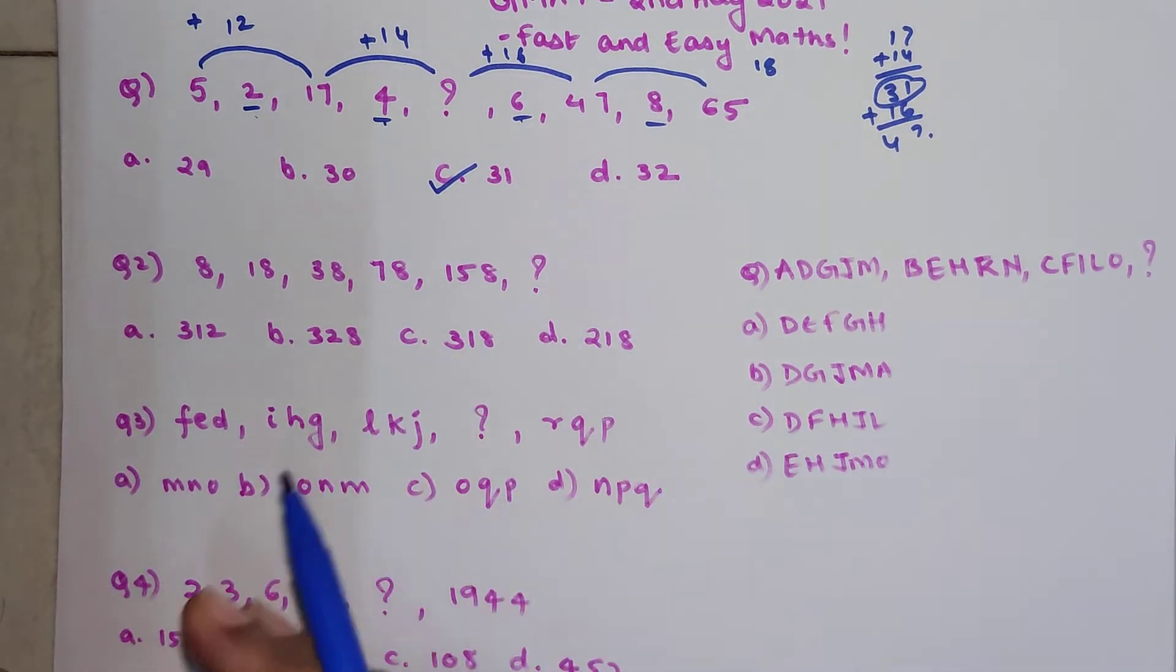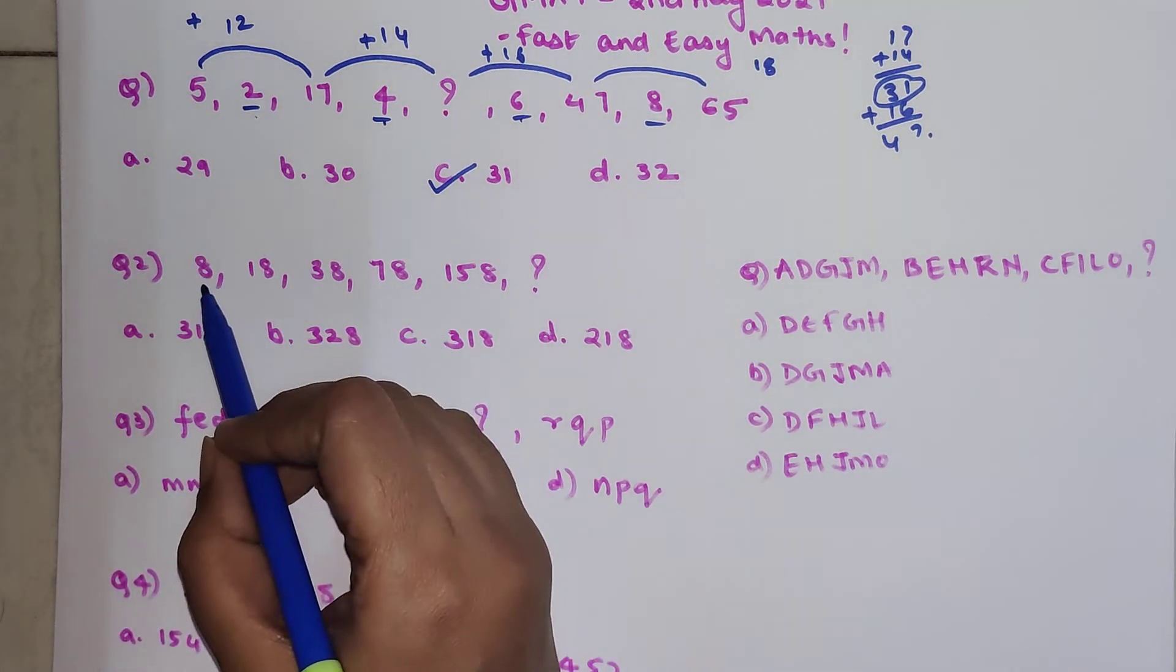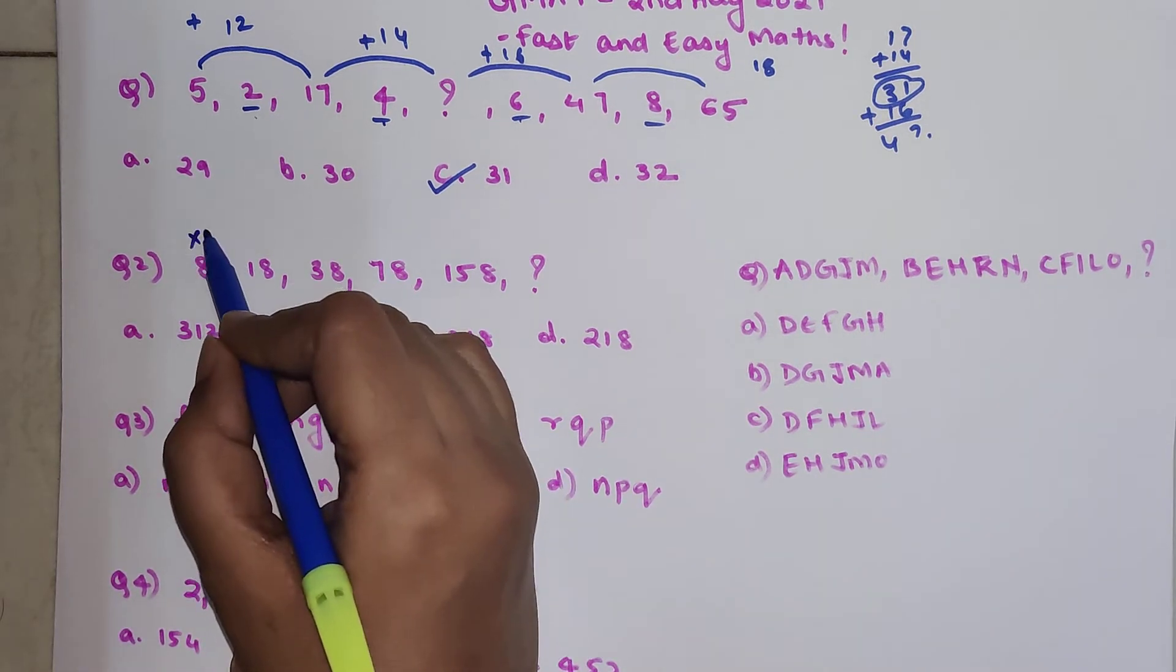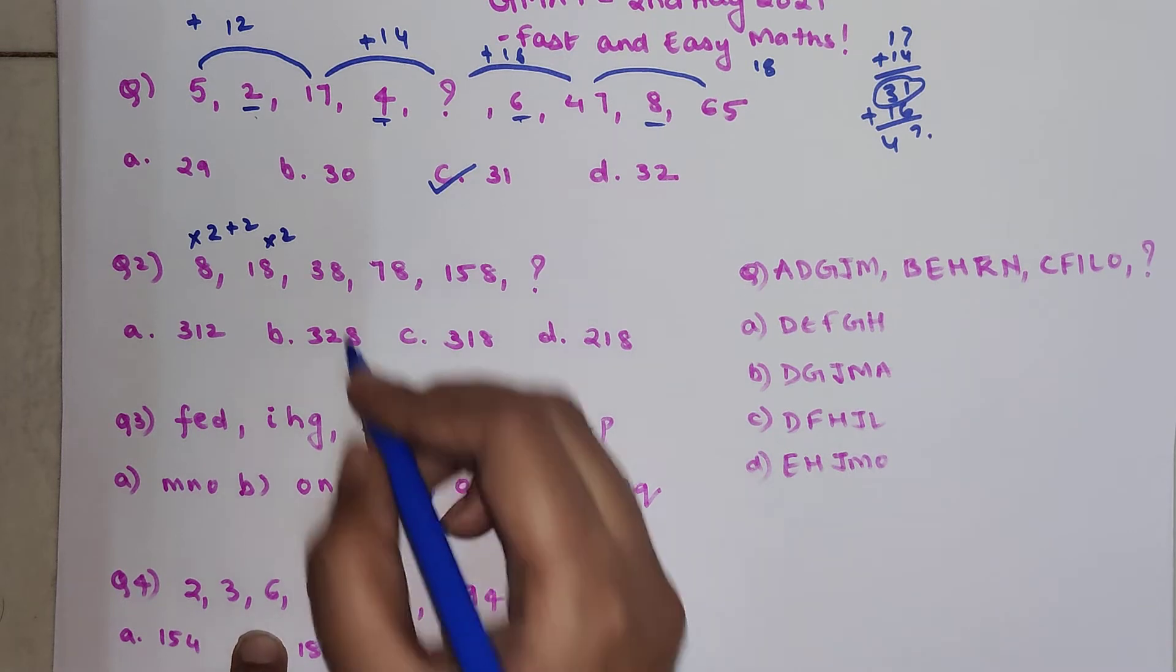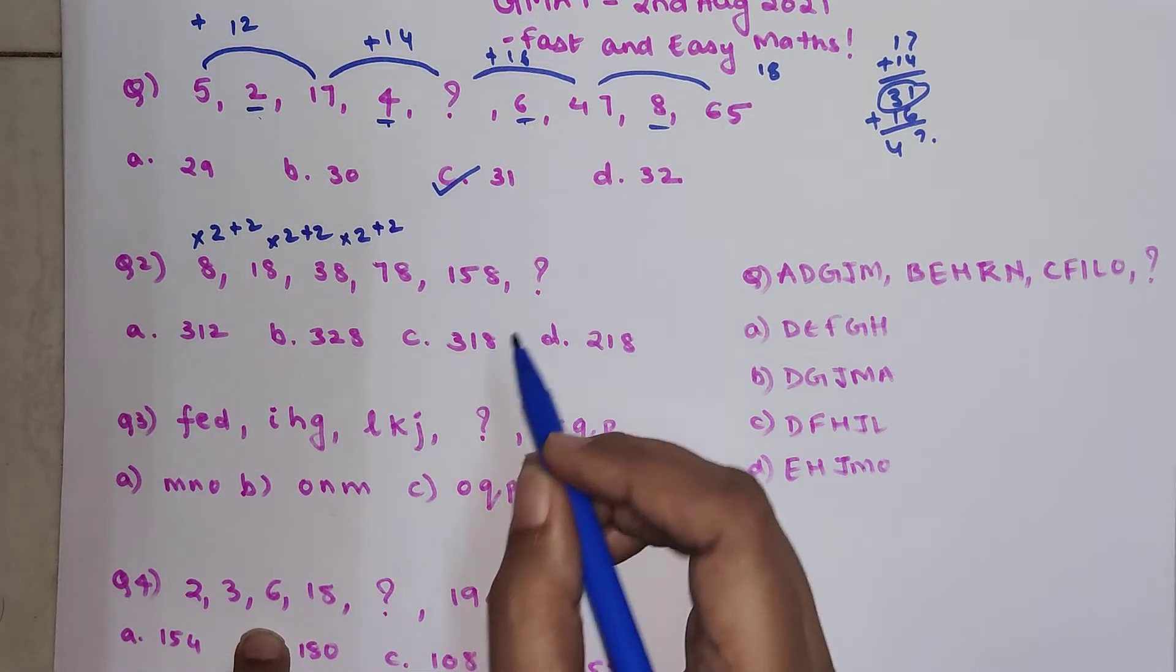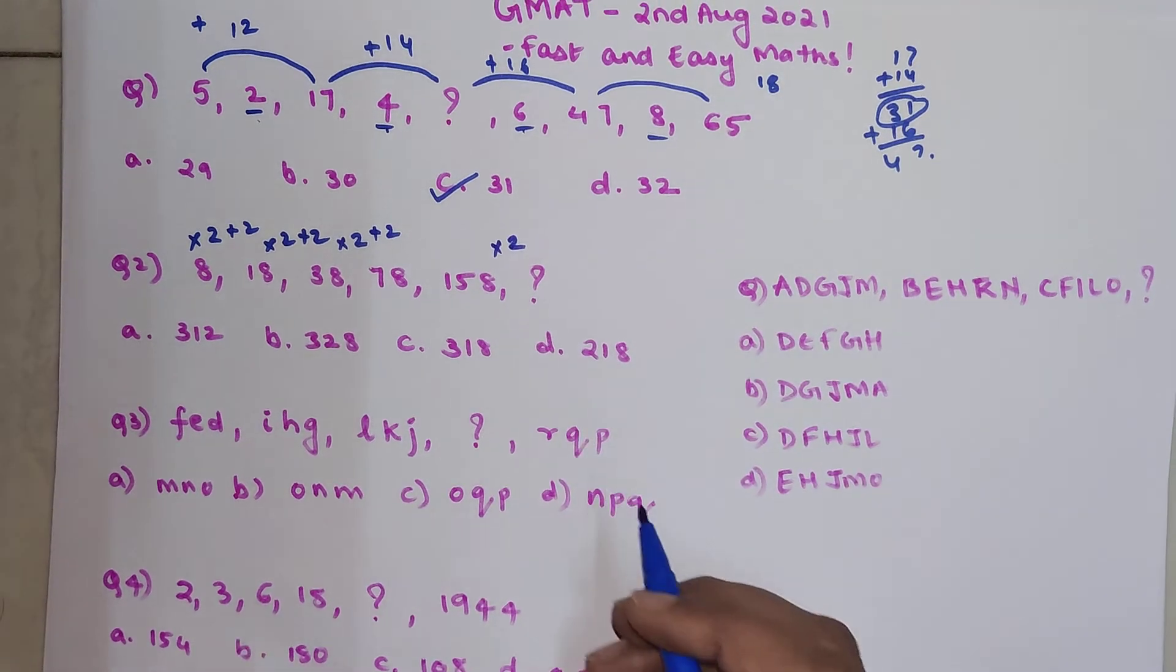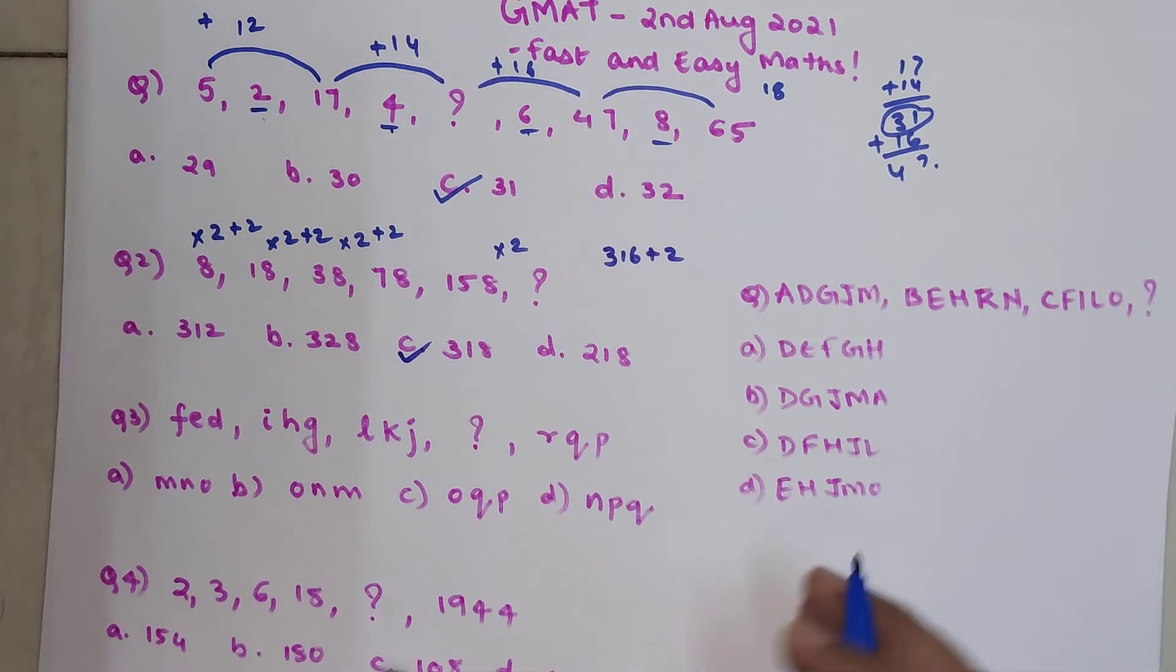All of them are even. If most of your elements are even, then you are somewhere dealing with multiples of 2, 4, 8, something like that. Now if you look closely, 8 and 18 - 18 is very close to double of 8. If I multiply 8 by 2 and add 2 to it, I get 18. Similarly, if I multiply 18 by 2, I get 36, and then add 2 to get 38. If you multiply 38 by 2, I get 76, and when you add 2, you get 78. Next, multiply by 2 to get 316, then add 2 to it. So your answer will be 318.